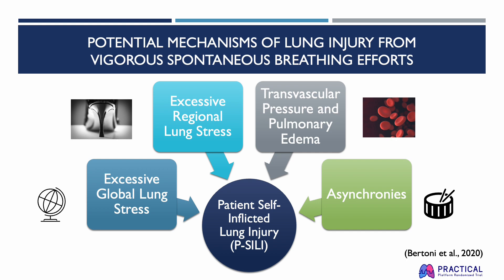Lastly are asynchronies. Patient-ventilator asynchronies can cause an increase in tidal volume and transpulmonary pressure, which can lead to lung injury as a result of the Pendeluft effect during vigorous patient efforts. Types of asynchronies include double triggering, which is double mechanical breaths from a single inspiratory effort, and reverse triggering, which are diaphragm contractions triggered by passive thoracic insufflation in passively ventilated patients. Overall, it is desirable to allow patients to have spontaneous efforts, but it is important to monitor and maintain respiratory efforts within safe ranges to avoid these risks to the lung.